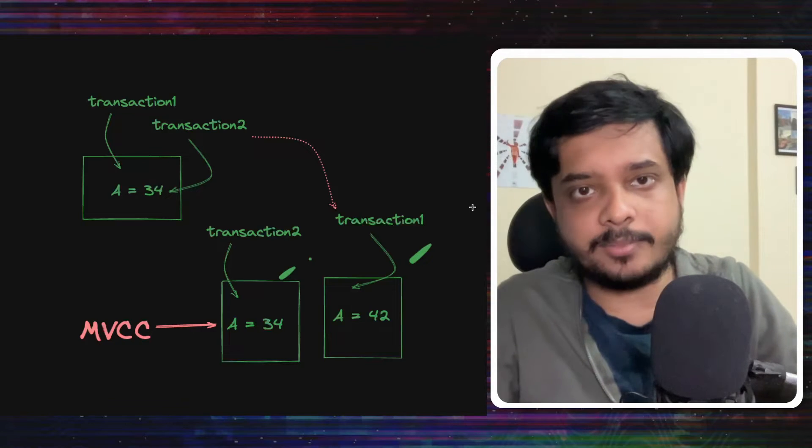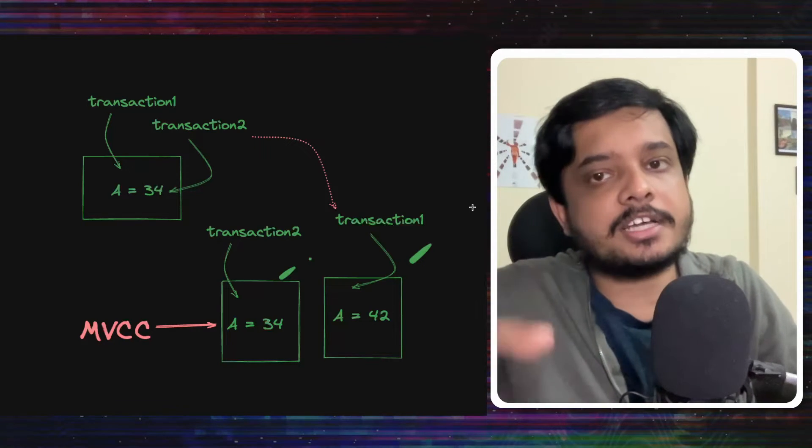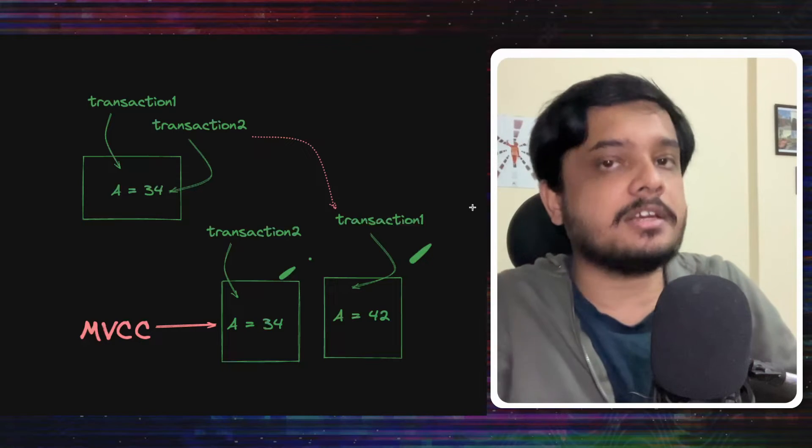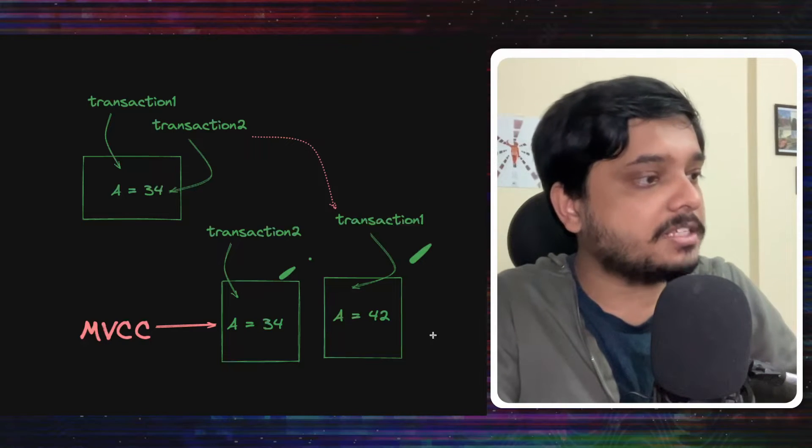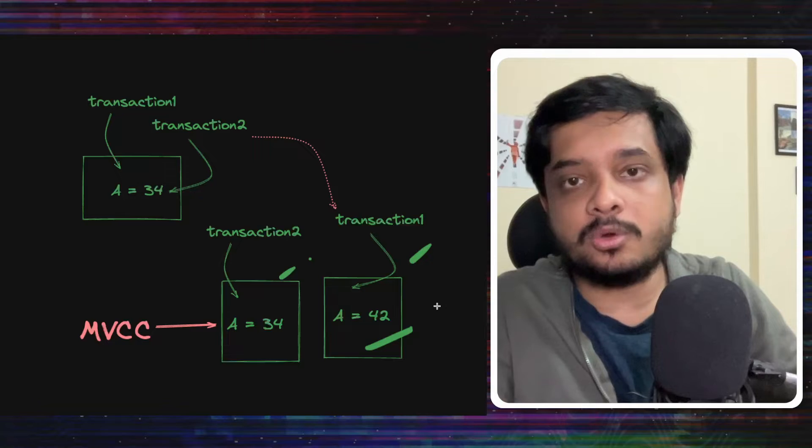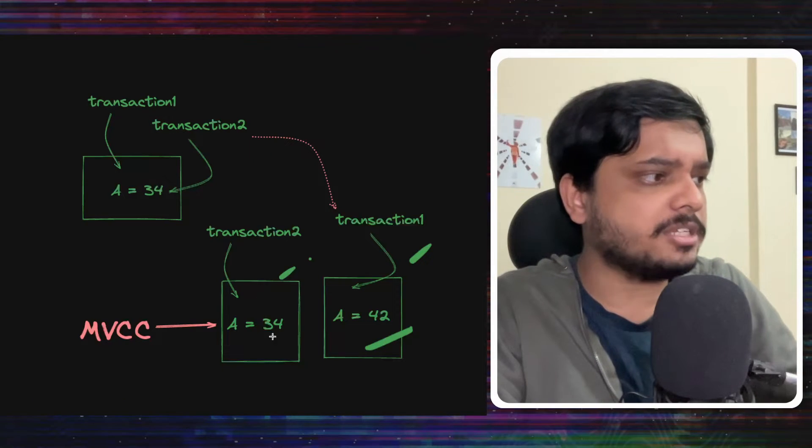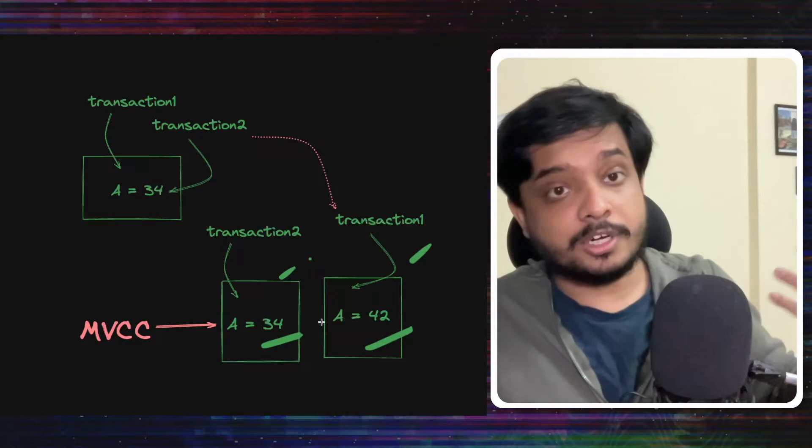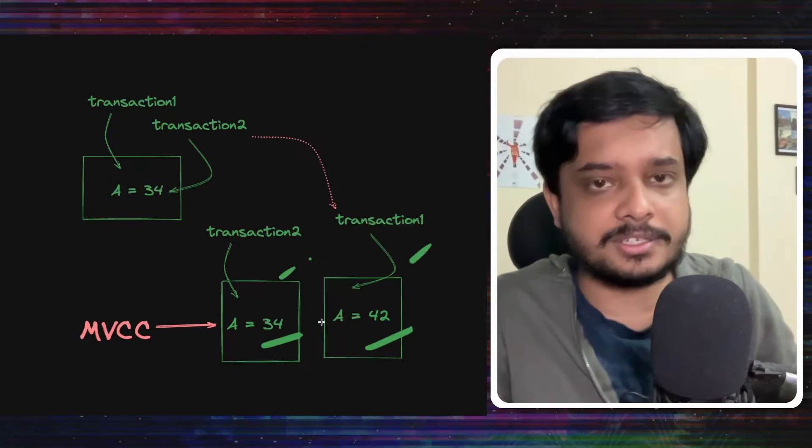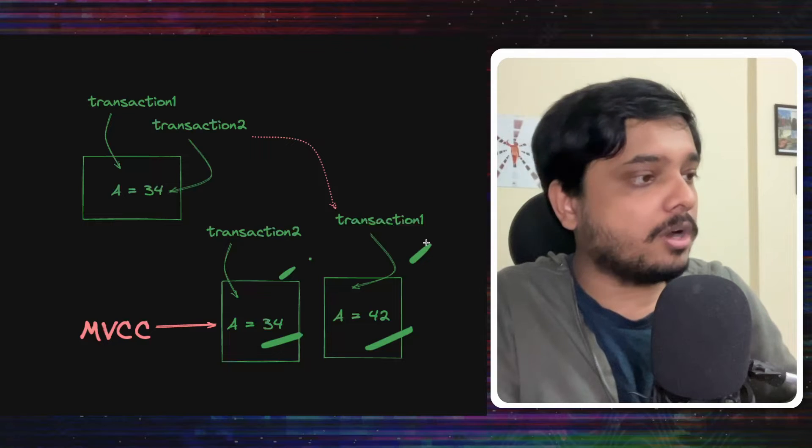Let's take an earlier example. A is set to 34. Let's say transaction 1 does not change this data directly. Instead, it makes a copy and sets A to 42. Now, transaction 2 comes along. It reads the original version, which is 34. It does not need to create a new version since it's just a read transaction. And in the meantime, transaction 1 fails.